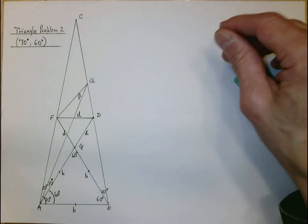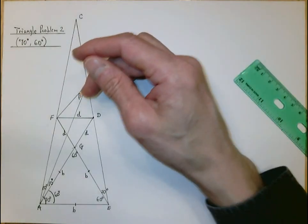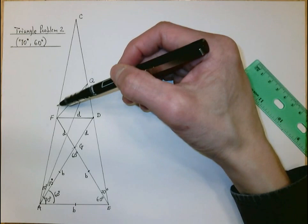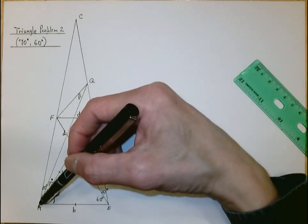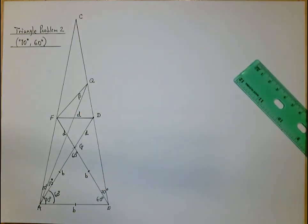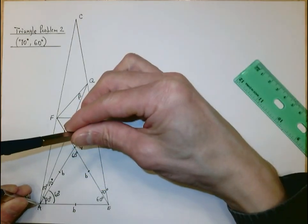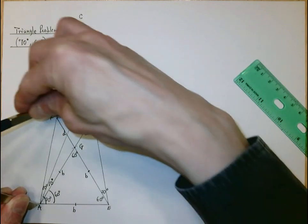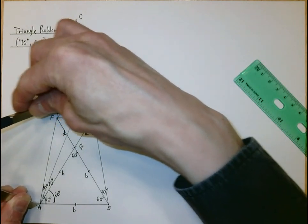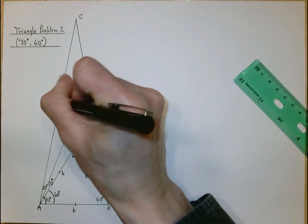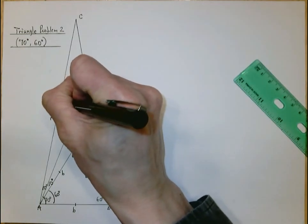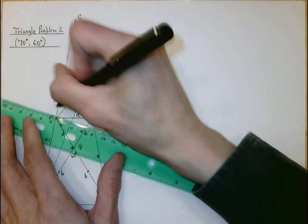The next thing is to locate a point H on CF such that HA will be congruent to AD. This is not difficult to do — we'll measure segment AD, construct point H, and then connect H to D.